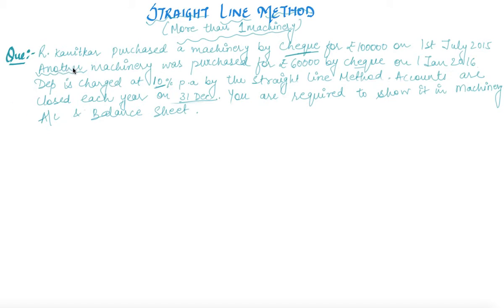The question states that Kanitkar purchased a machinery by cheque for rupees 1 lakh on 1st July 2015. That is your first machinery M1. Another machinery, M2, was purchased for rupees 60,000 on 1st January 2016. Since the purchase dates differ, the depreciation is also to be calculated separately for each.